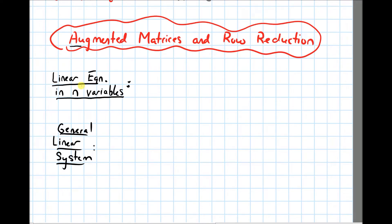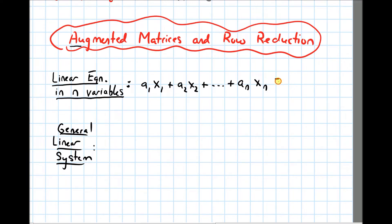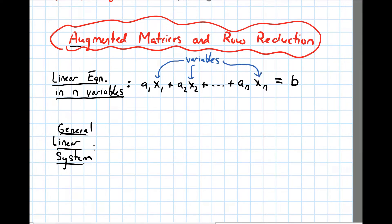I want to begin by just writing a definition for what a linear equation in n variables looks like. In general, if I have a linear equation, it's going to look something like a1 times x1, plus a2 times x2, plus dot dot dot, plus an times xn. The variables are the xi's — x1, x2, xn. Those are the variables, all the x's.